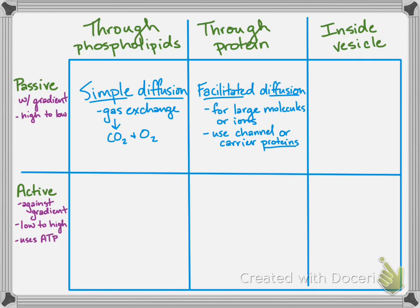We call these channel or carrier proteins. Channel proteins are simply an opening; carrier proteins bind. But they are all moving things from high to low, and they're all there to move those large or ionic molecules — things like glucose or amino acids.